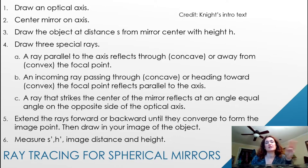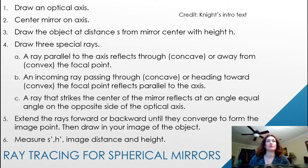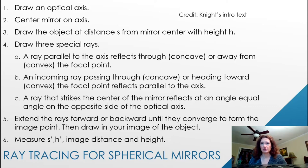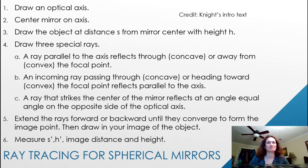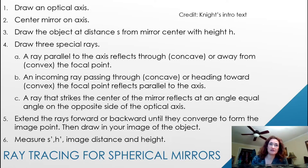First, draw a ray parallel to the optical axis that reflects through — for a concave mirror — or away from — for a convex mirror — the focal point. Next, draw an incoming ray that passes through (concave) or heads towards (convex) the focal point and then reflects parallel to the axis.